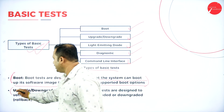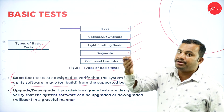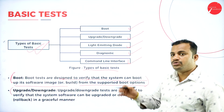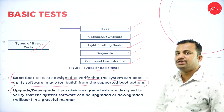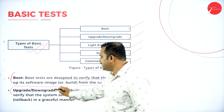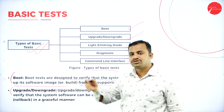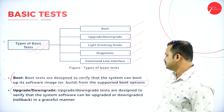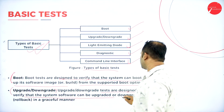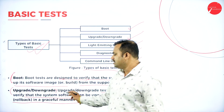Then upgrade or downgrade. If any new features are incorporated — that is, scalable options are incorporated — the system has to be upgraded to the successful operational state. Or else it has to be downgraded to the earlier state which was running properly. Tests are designed to verify that the system software can be upgraded or downgraded — that is, rolled back — in a graceful manner.